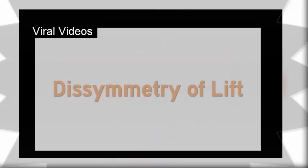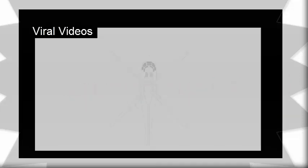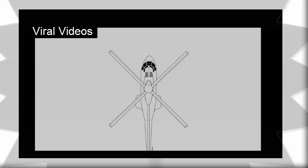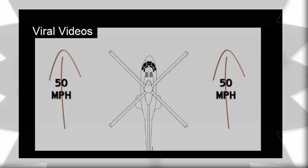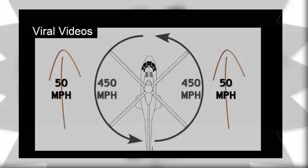This is what's known as dissymmetry of lift. It's a problem unique to rotor flight aircraft and something that helicopter engineers have had to compensate for. Here's a little more detail on why this lift imbalance occurs. Let's imagine that our helicopter is traveling forward at 50 miles an hour and, for the sake of easy math, say that our rotor tip speed is 450 miles an hour. Now to find the relative speed of the rotor compared to the air, we have to add these values together. And because the retreating blade is moving in the opposite direction from our travel speed, the travel speed is subtracted away from the rotor tip speed on that side.